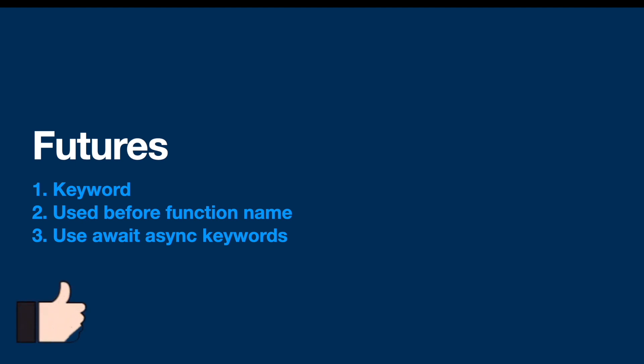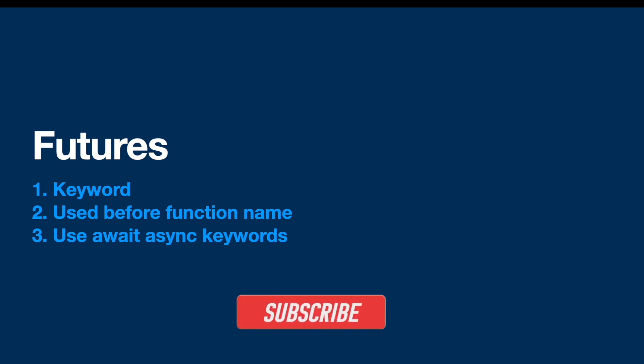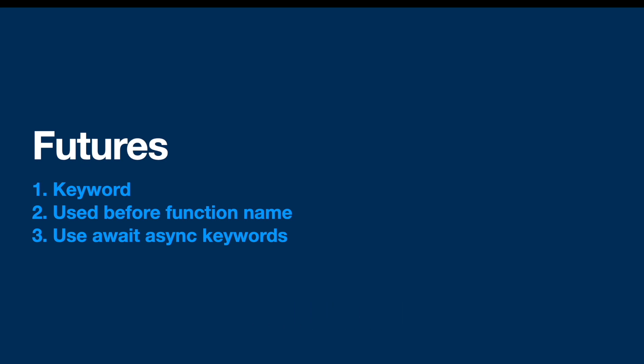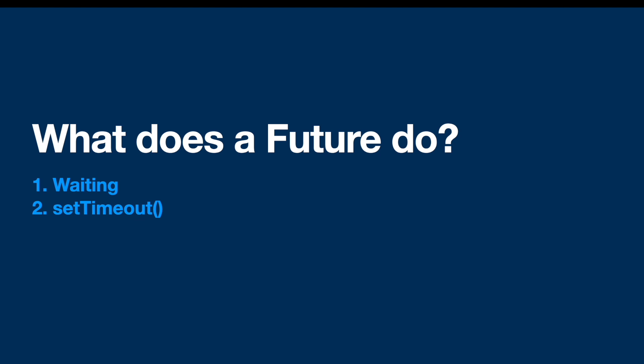Hello everyone, assalamualaikum. In this tutorial we'll see what futures are in Flutter and how to use them. Future is a special keyword you need to use before a function name. If a function already is a future, you may need to use await and async when you call it. We use futures for waiting — if a function needs some time to get its job done, your app can do other things instead of getting stuck. It's more like a setTimeout function in JavaScript.